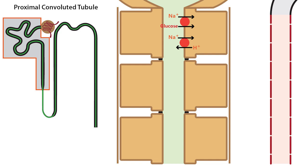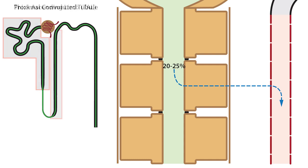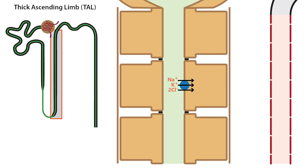Now, the sodium gradient required for the reabsorption of sodium from the ultrafiltrate is established by the basolateral sodium-potassium ATPase. Also, 20-25% of the sodium in the ultrafiltrate is reabsorbed along the thick ascending limb via the apically located sodium-potassium 2-chloride cotransporter or NKCC2.